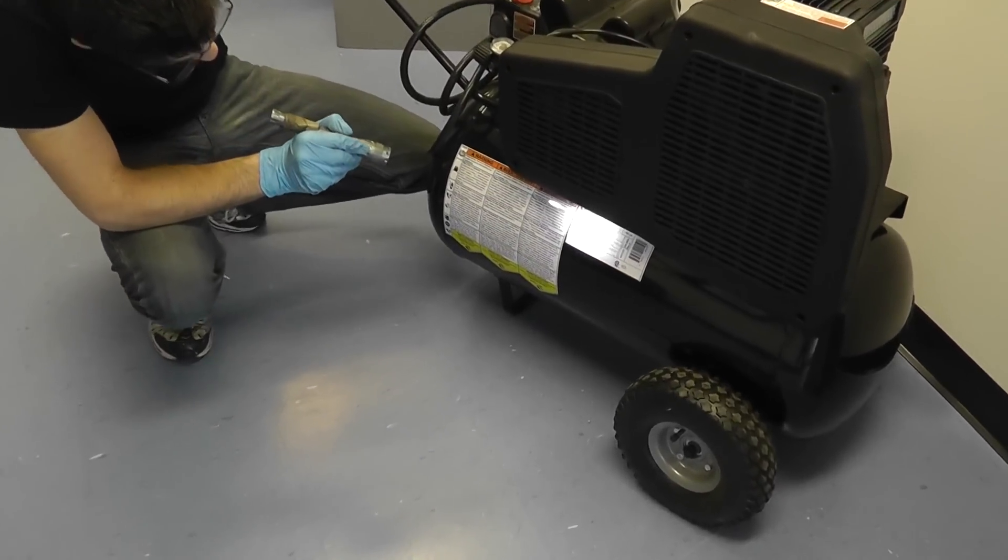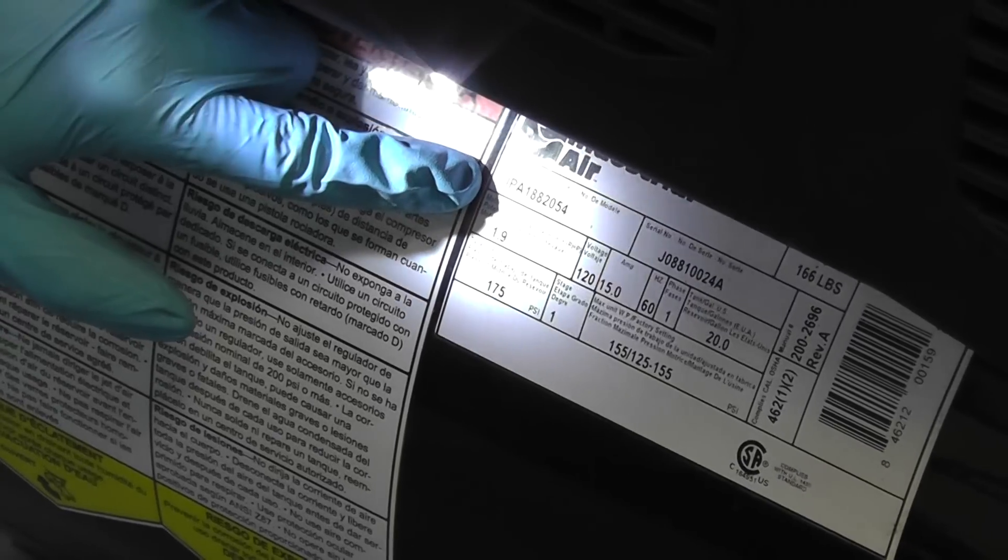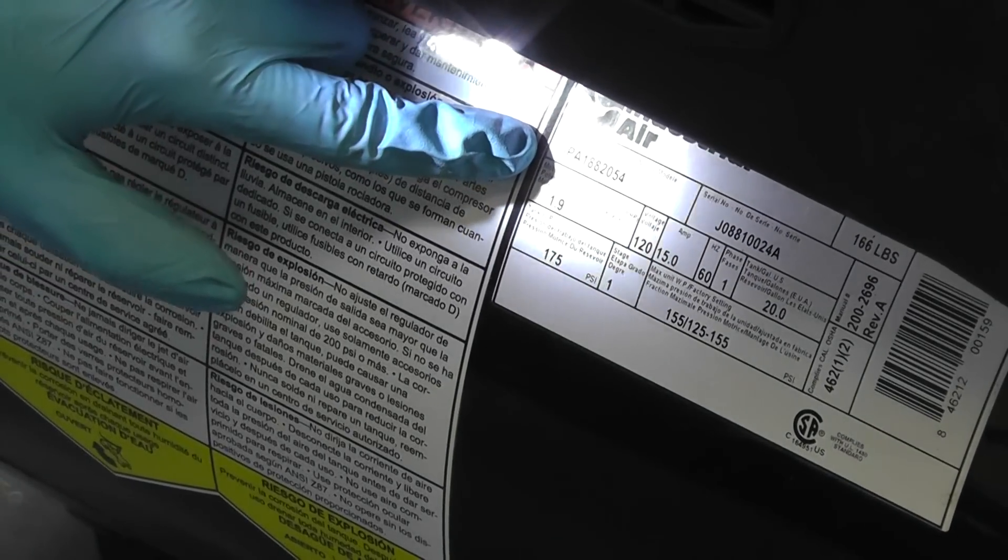This is a model number label where you'll see the logo right directly underneath. You'll see that model number, which typically with Sanborn compressors will start with two or three letters.